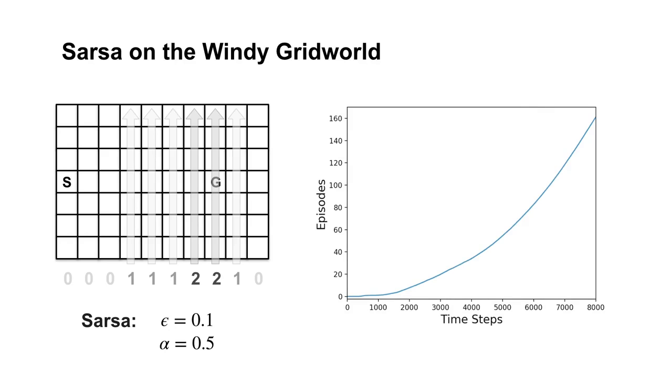This plot shows the total number of episodes completed after each time step. The results are averaged over 100 runs. Notice that the first few episodes take a couple thousand steps to complete.